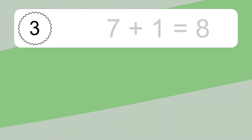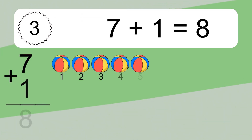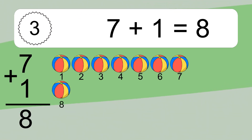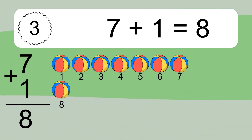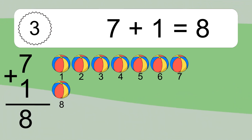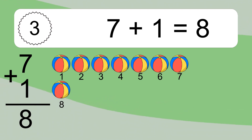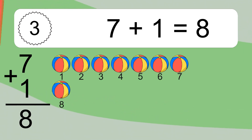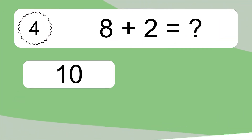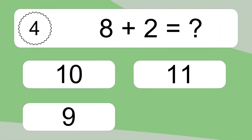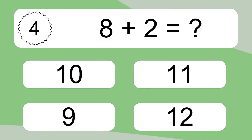7 plus 1 equals what? 7 plus 1 equals 8. Let's count it: 1, 2, 3, 4, 5, 6, 7, 8.